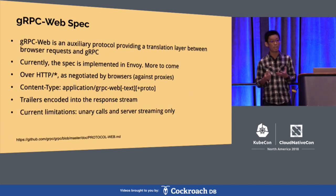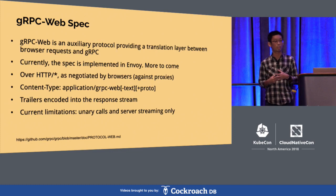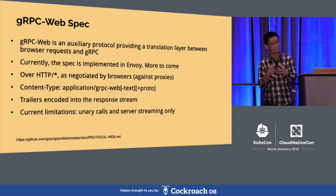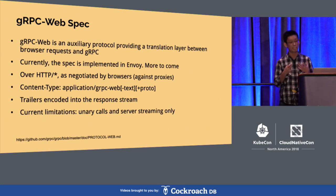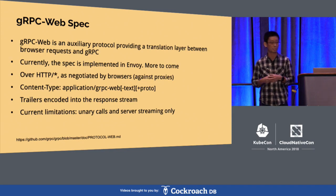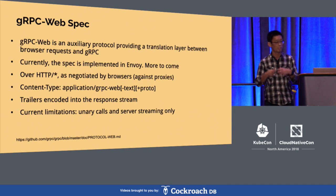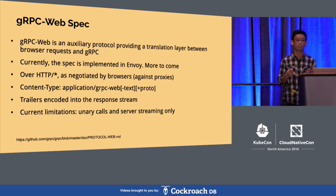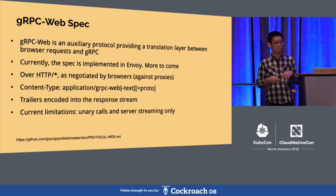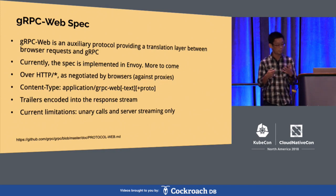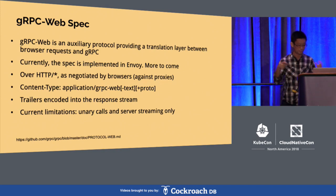So gRPC Web is actually an auxiliary protocol defining a translation layer between browser requests and gRPC. Currently, that translation is implemented in Envoy, a fellow CNCF project. We are trying to implement more — we actually started off implementing it as an Nginx module. Right now it's in Envoy with out-of-the-box support. You can flip a switch and use it. It's over standard HTTP, with a custom content type to specify that this is a gRPC Web request, and the trailer is encoded in the stream itself.